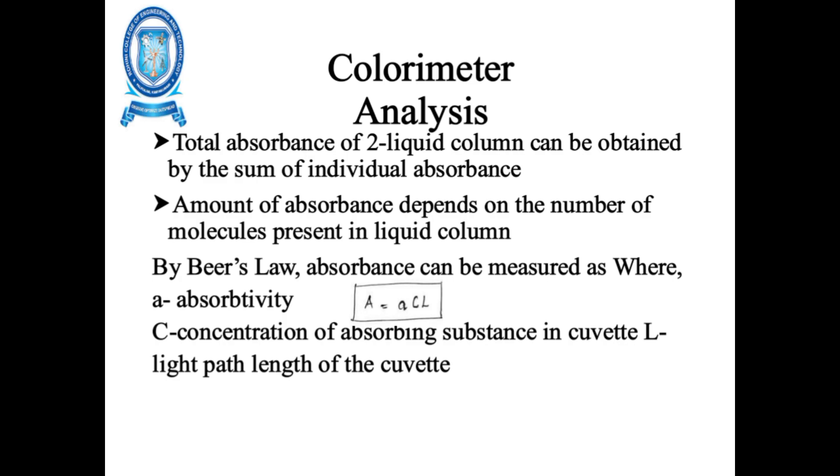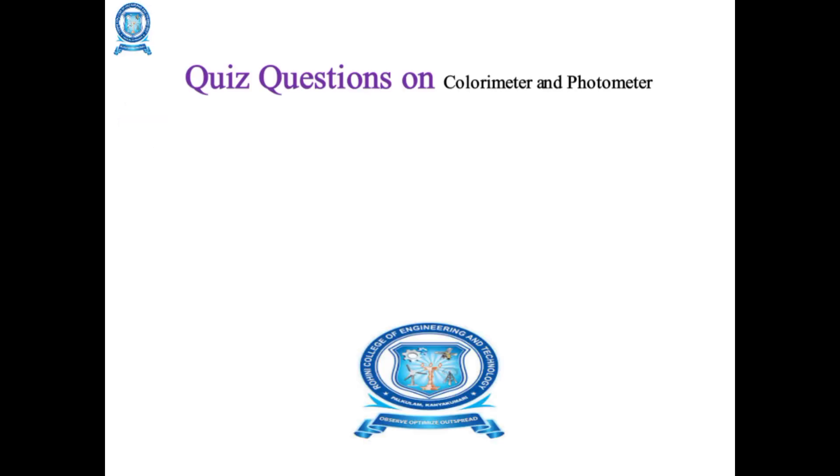By Beer's Law, absorbance can be measured as A equals aCL, where A is absorptivity, C is concentration of absorbing substance in the cuvette, and L is the light path length of the cuvette.